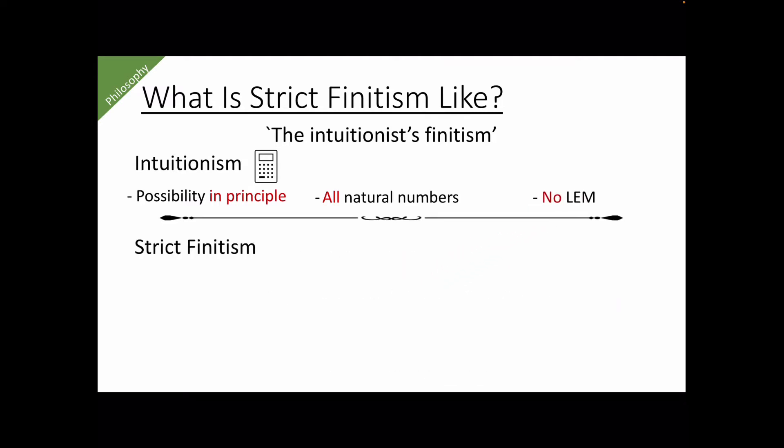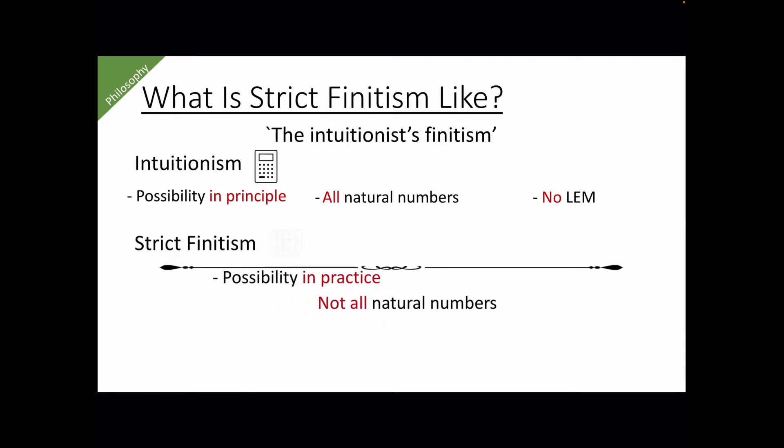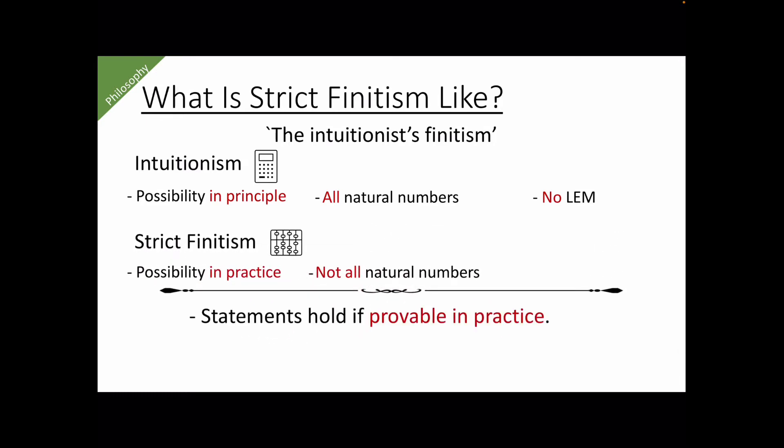Similarly, strict finitism is also a kind of constructivism, but with less power because it uses possibility in practice. According to the strict finitists, therefore, numbers are constructible in practice, and not all natural numbers are legitimate. They also think that statements hold if they are provable in practice, so they also reject the law of excluded middle. Here, interestingly, they agree with the intuitionist.